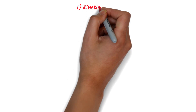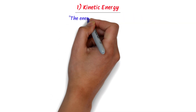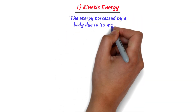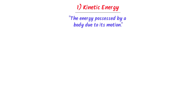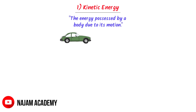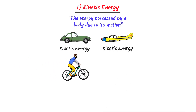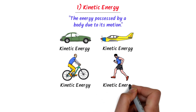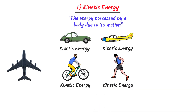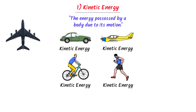The first form of energy is kinetic energy. The energy possessed by a body due to its motion is called kinetic energy. For example, when a car is moving, it possesses kinetic energy. When an airplane is moving, it possesses kinetic energy. When a bicycle is moving, it possesses kinetic energy. Even when we human beings walk, we possess kinetic energy. So anything that is moving possesses kinetic energy.